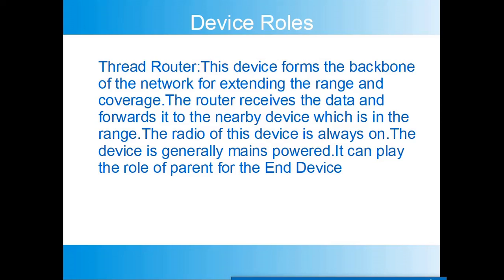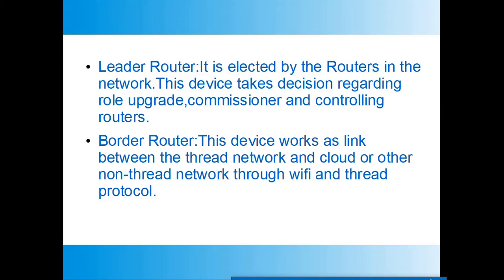Now we will see the roles played by devices in Thread Protocol. The first device is the Thread Router. As the name suggests, it does the job of routing and forms the backbone of the network for extending range and coverage. The router receives data and forwards it to nearby devices within radio range. The radio of this device should always be on, and the device is generally mains powered. As a router, it can play the role of parent for Thread end devices.